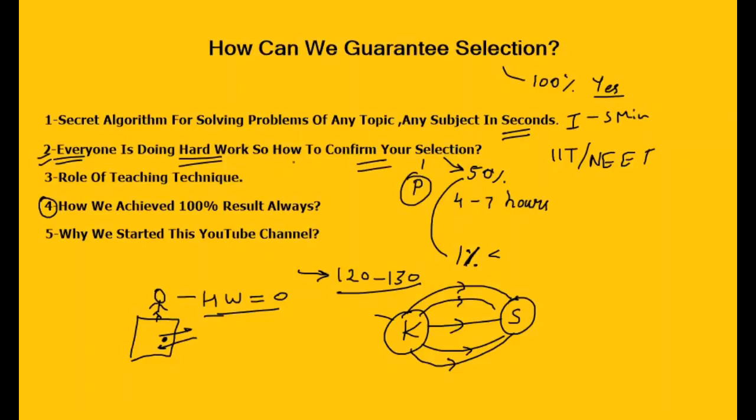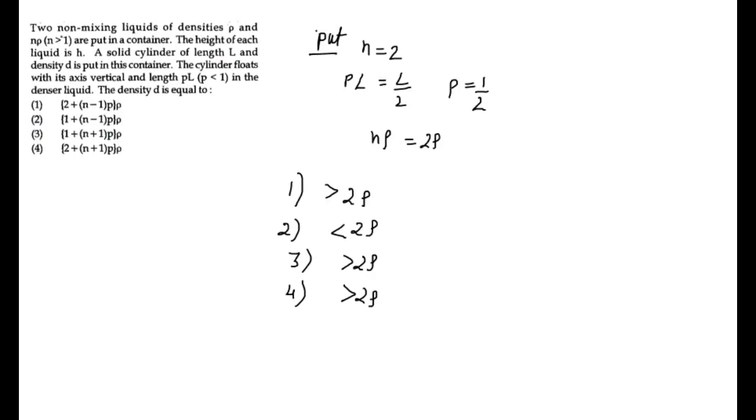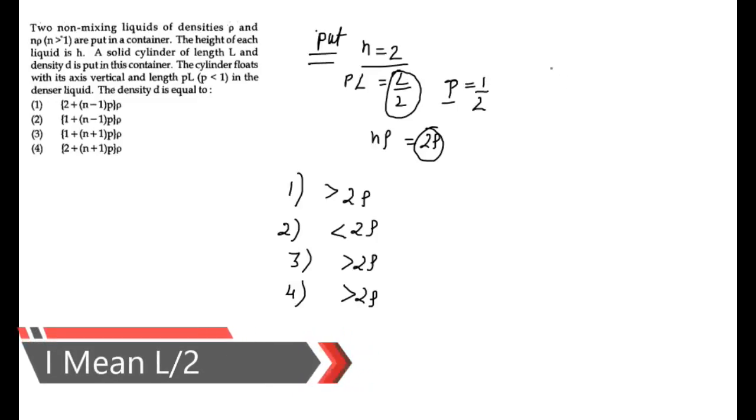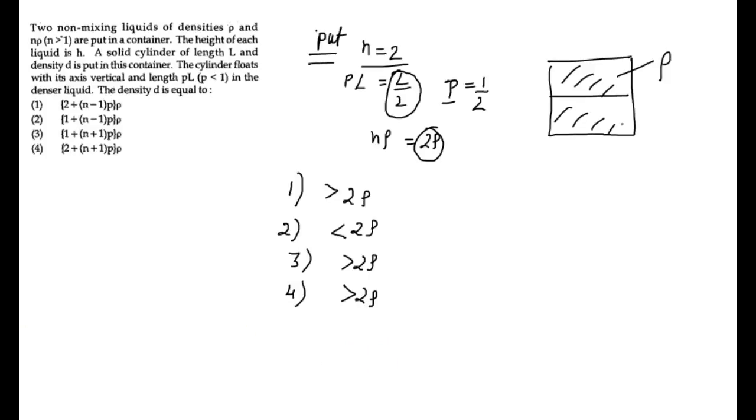I have already taken some inputs from before like you can already see. I have kept the value of n as 2. Now our density is 2 rho. After putting n equal to 2, and p's value I have taken as 1 by 2. So the value of length becomes 1 by 2. Hence, the situation is something like this. This is my rho density and at the bottom part is 2 rho density. The denser it is, it is at the bottom. And the arrangement is something like this, L by 2.